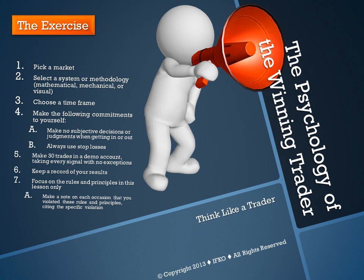Here's how I want you to set up the exercise for this entire lesson. Pick a market — choose one actively traded Forex, and if not Forex, a stock or futures contract to trade. It doesn't matter what it is as long as it's liquid. Then choose a set of market variables that give you an edge. This can be any trading system you want. The system or methodology you choose can be mathematical, mechanical, or visual, based on patterns. It doesn't matter whether you personally design the system or purchase it from somebody else.